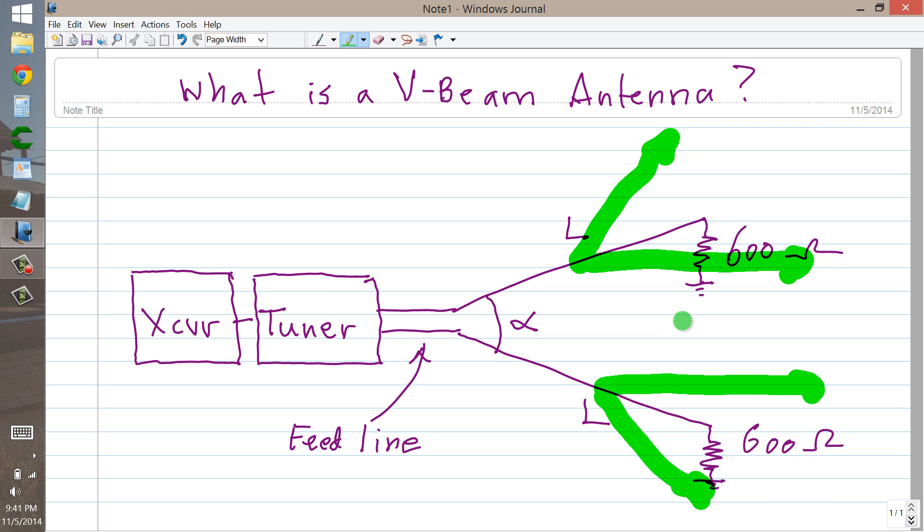So a V-beam really works very much like a rhombic. It's just half of a rhombic. It's a little bit less complicated, a little bit less real estate, perhaps. But you need two resistors instead of just one.